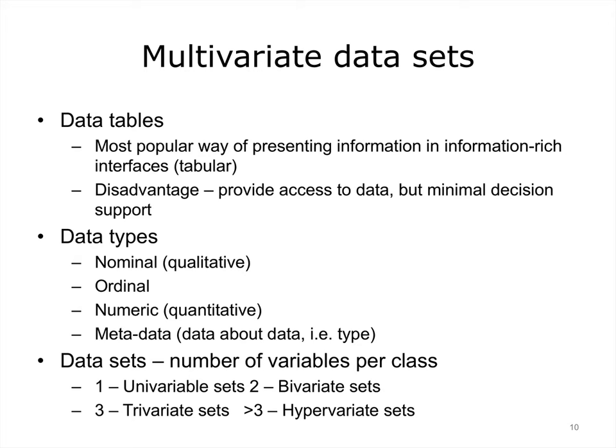There are many ways to think about data types. We will talk about one of the simplest taxonomies. Nominal data is any qualitative data that simply includes categories — for example, names of states or people. Ordinal data presupposes some order to it — for example, age categories: 18–20, 21–35, etc. Numeric data is any data that has a numeric value — for example, age of individuals. Finally, metadata is data about data — for example, its type.